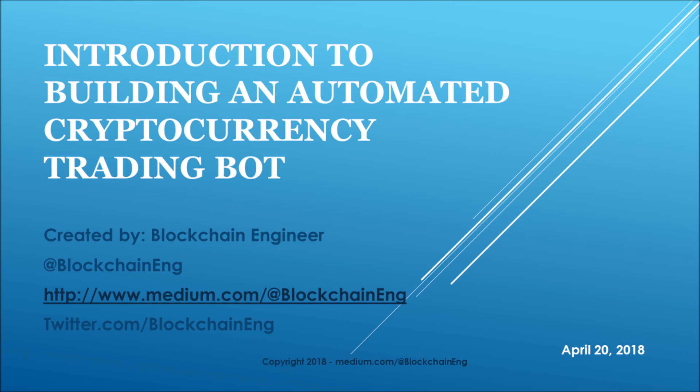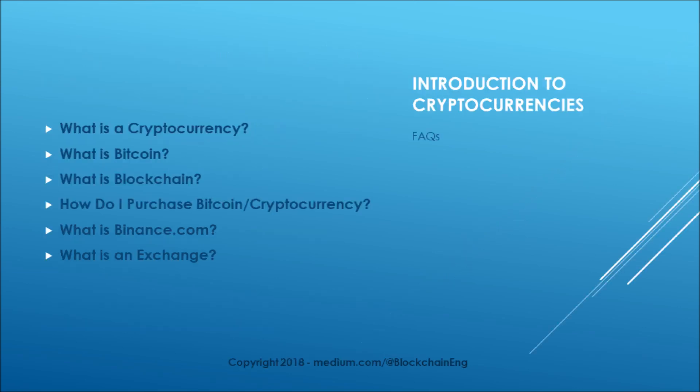First, a little introduction to cryptocurrencies. A cryptocurrency is a cryptographically signed store of value, similar to e-cash or digital cash. Bitcoin is a cryptocurrency and one of the most popular, with a current market price of over eight thousand dollars. A blockchain is a technological advance of triple-entry ledger where transactions are recorded in blocks that are connected to one another, providing a great way of recording transactions and ownership of a particular asset such as a cryptocurrency.